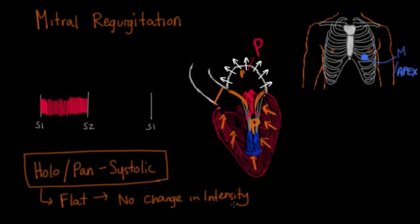This murmur will actually radiate to the axilla. If you picture this valve sitting in that general area, when blood flow goes back the other way it's going to be forced in the direction of the armpit. To mention the right-sided valve problem — tricuspid regurgitation — you have the same murmur: a holosystolic flat murmur, but in that case you would hear it in the tricuspid area, and that murmur wouldn't radiate to the axilla because the valve is in a different position.